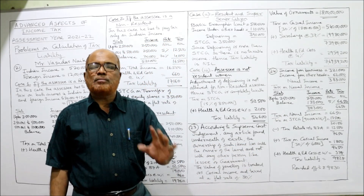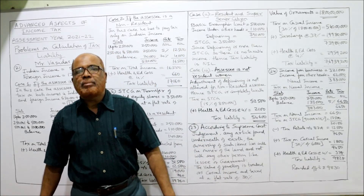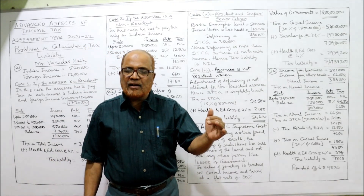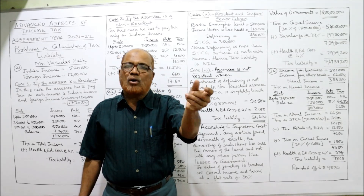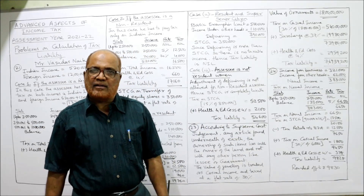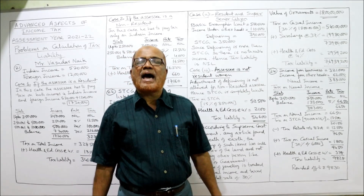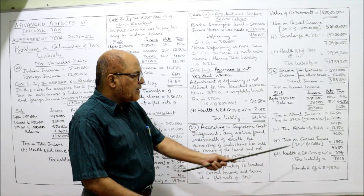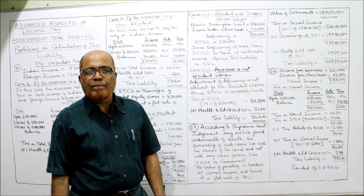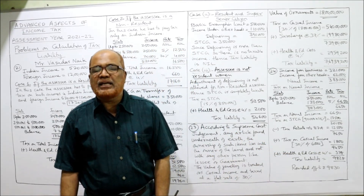Tax on normal income is ₹6,650. Adding tax on STCG: 15% of ₹90,000 = ₹13,500. Total tax so far: ₹20,150. Tax rebate under section 87A — least of actual tax ₹20,150 or ₹12,500 — so ₹12,500 is deducted, leaving ₹7,650. Adding tax on casual income (horse races): 30% of ₹6,000 = ₹1,800. Total: ₹9,450. Adding 4% health and education cess = ₹378. Total: ₹9,828.